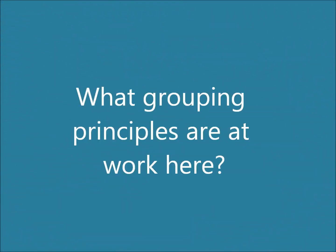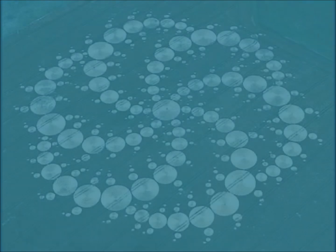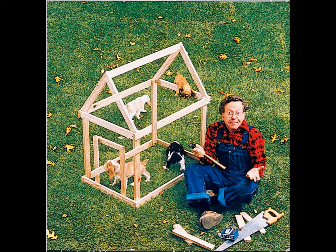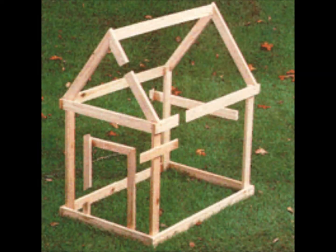So now test yourself a little bit. What grouping principles are at work in this crop circle? Continuity. Try again. What about this one? It's continuity and closure. Here's the solution: the angle of the photo causes confusion, so the brain tries to make sense of it by finishing the lines and closing the gaps.